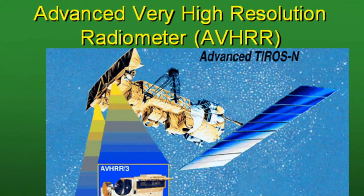Welcome back to remote sensing applications for ArcGIS. This week we'll be working with a sensor called the Advanced Very High Resolution Radiometer, or AVHRR, which has been in existence since the early 1980s.